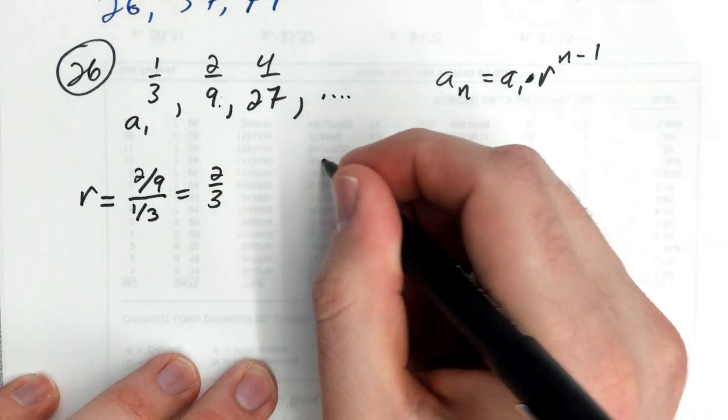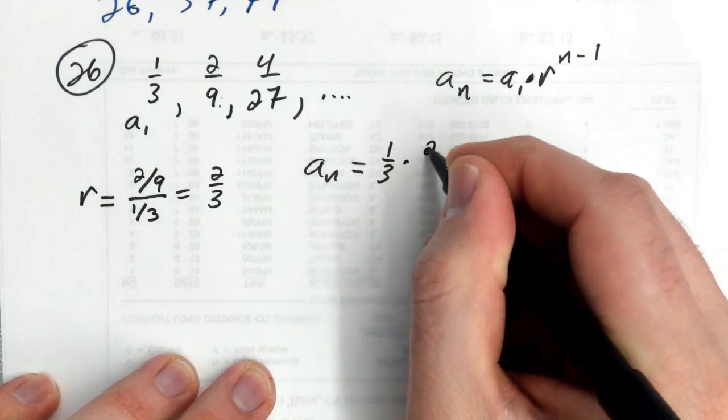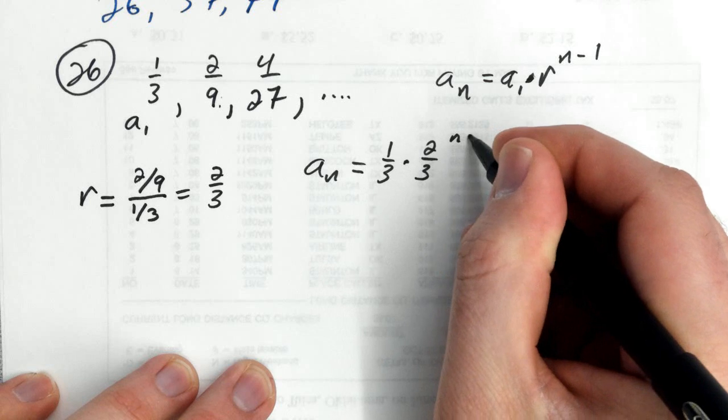And so from that we can get our rule. A sub n is equal to the first term, which is 1 third, times 2 thirds raised to the n minus 1.